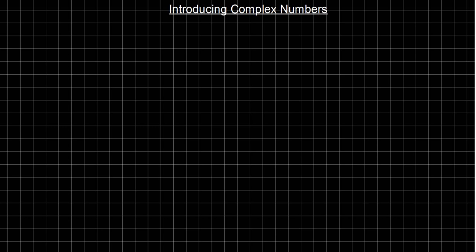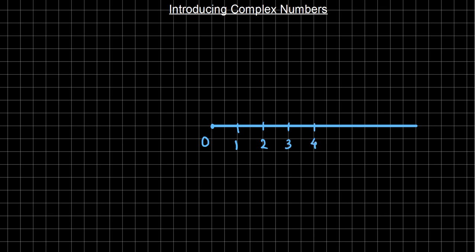Let's represent those numbers on an axis. So the numbers I'm going to represent on an axis like this. Let's say starting from zero — say for example the time at which you have done the investment — and the positive numbers on the right: three, four and so on.